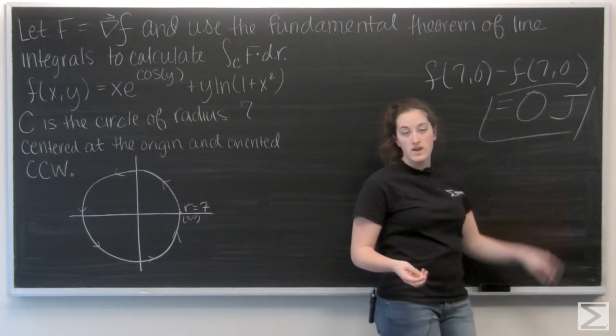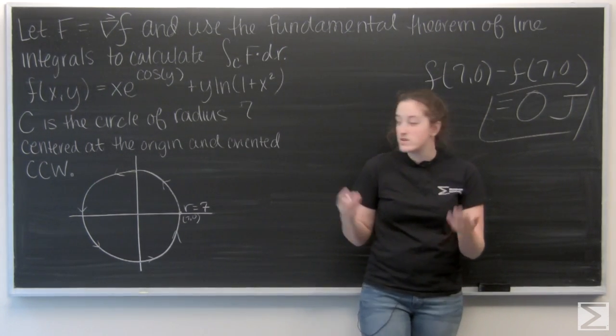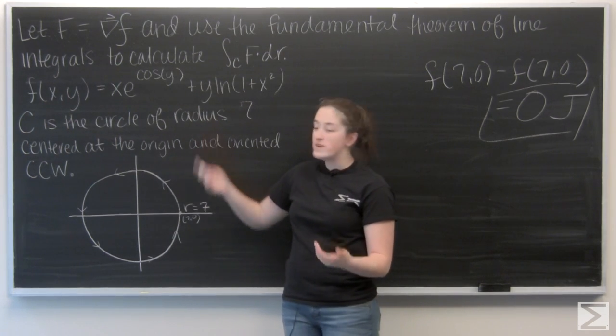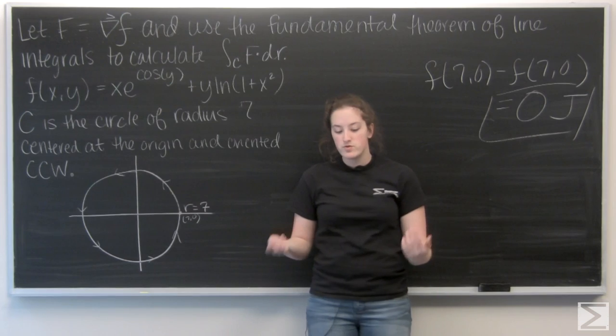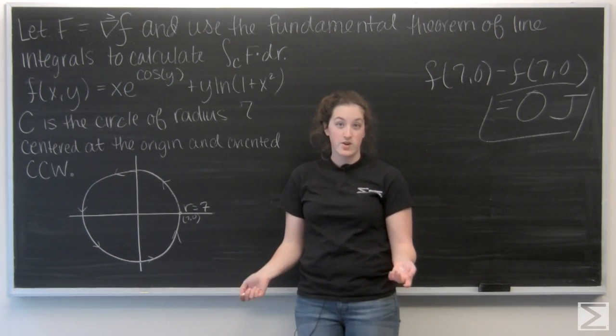So 0 joules. And if you wanted to plug it in, you could check. But 7 and 0 are going to give you the same function values both times. So the line integral around this curve is just going to be 0.